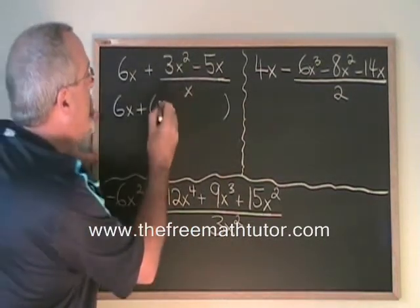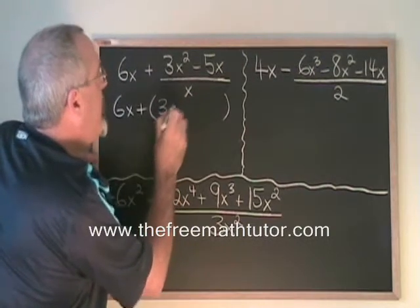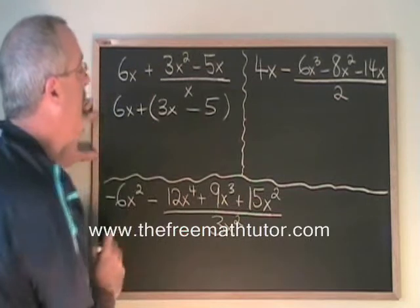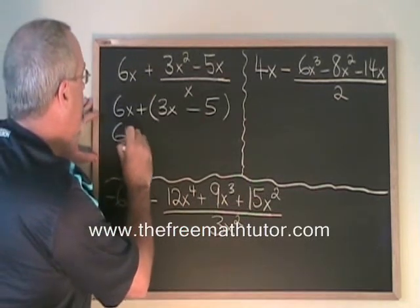3x squared divided by x is 3x. Minus 5x divided by x is minus 5. I remove the bracket as a separate step.